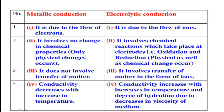In metallic conductors, conductivity decreases with an increase in temperature because heat conduction increases. But in electrolytic conductors, conductivity increases with increasing temperature, because raising the temperature increases the kinetic energy of molecules in the solution, which increases electric conductivity. In this way you can differentiate between metallic conductors and electrolytic conductors.